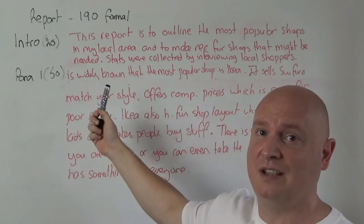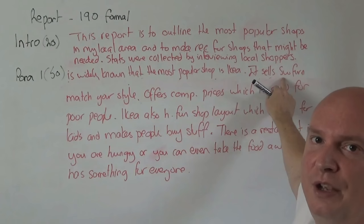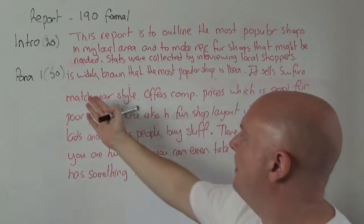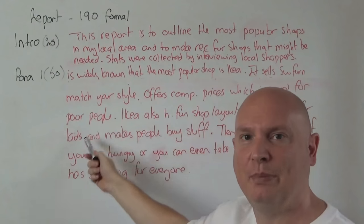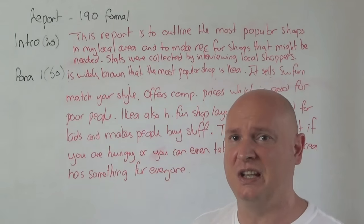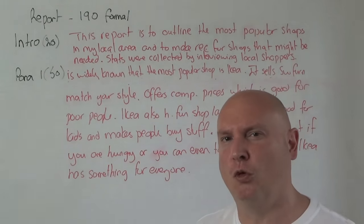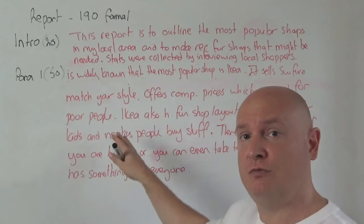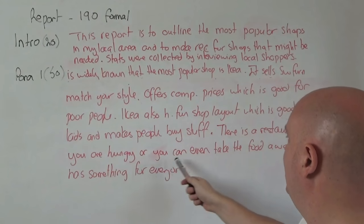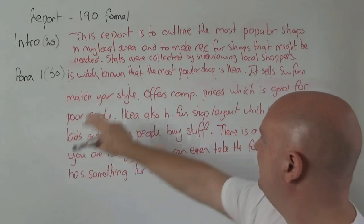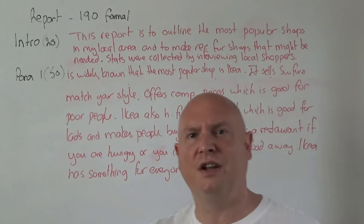It is widely known that the most popular shop is IKEA. It sells Swedish furniture which matches your style — nice collocation — offers competitive prices which is good for all consumers. IKEA also has a fun shop layout which is good for kids and makes people buy things. There is a restaurant if you are hungry or you can even take the food away. IKEA has something for everyone. I mean, it starts off okay but it gets a bit basic towards the end — my consistency isn't great and I need to change it. But 'IKEA has something for everyone' — it's nice to finish that paragraph with a little summary.